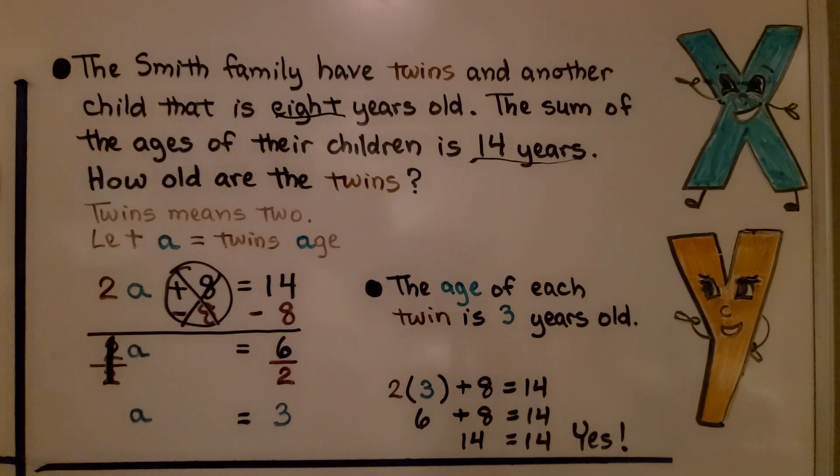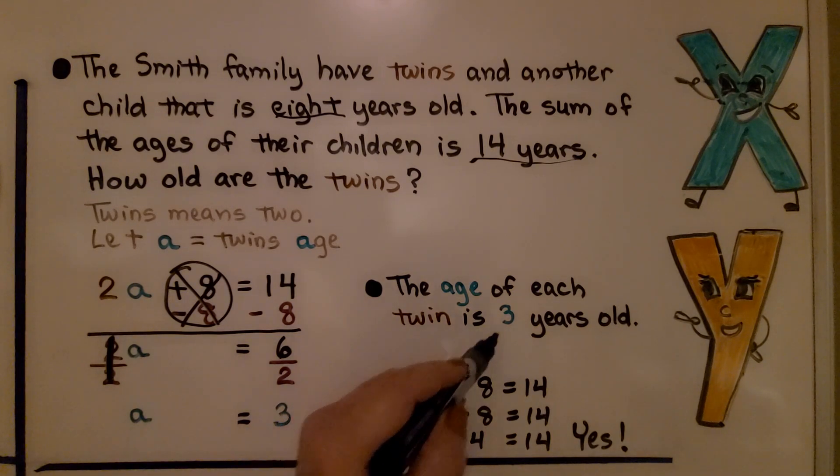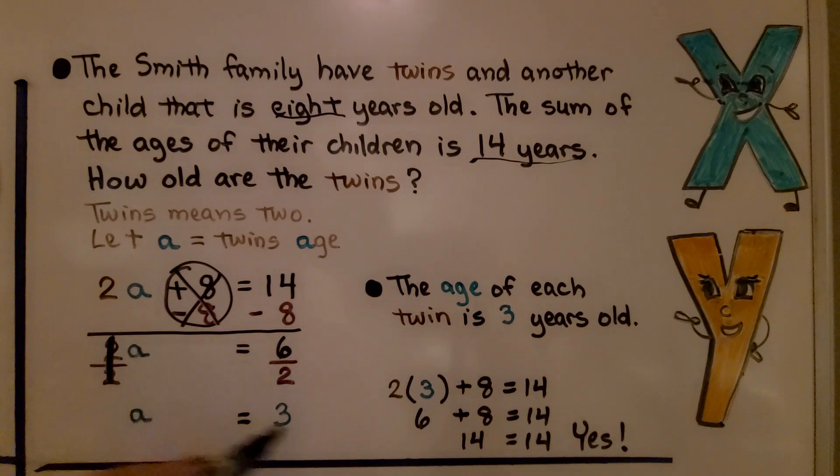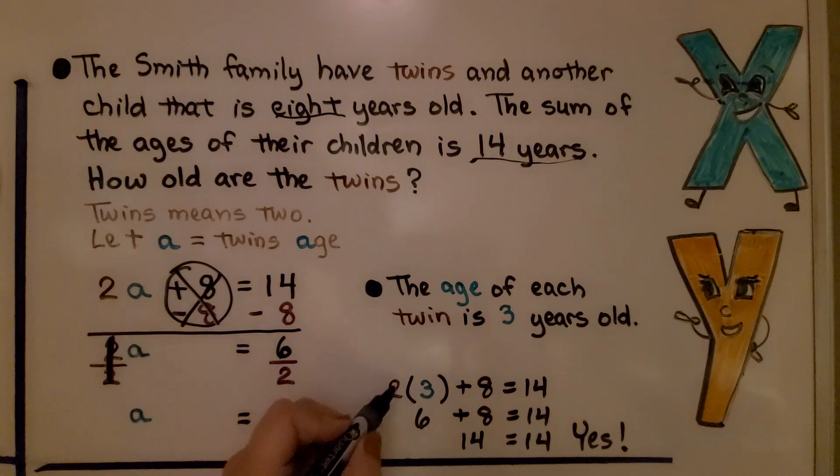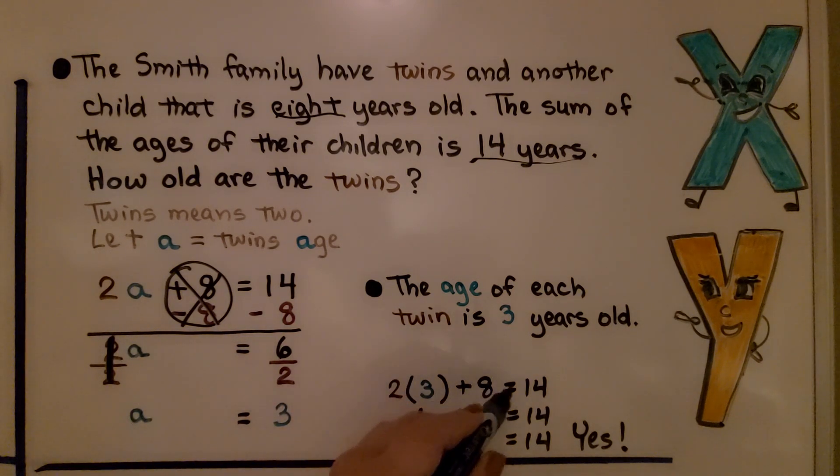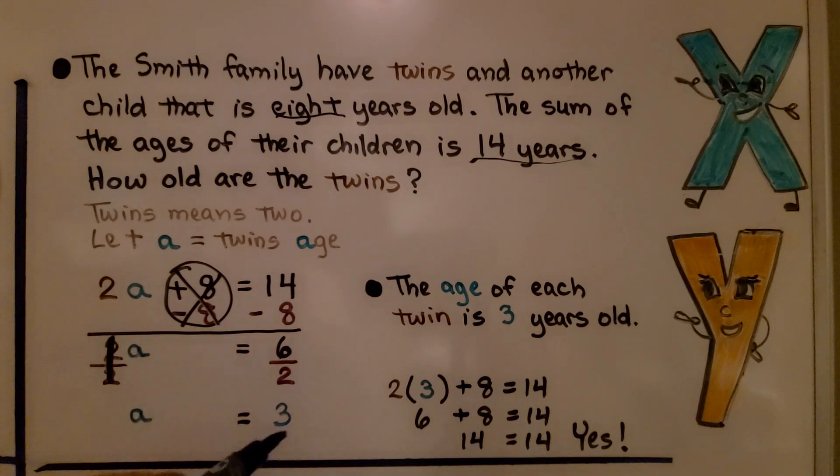Now we can check to make sure we did it correctly by inserting 3 for A into our equation. 2 times 3 plus 8 equals 14. That would be 6 plus 8 equals 14. Yes, that makes sense. It makes the equation true. We know 3 is the solution to the problem, to the equation.